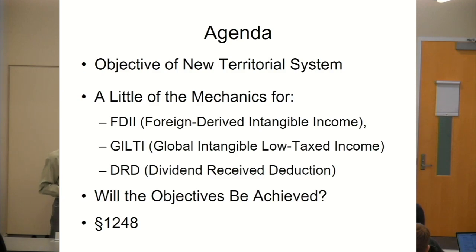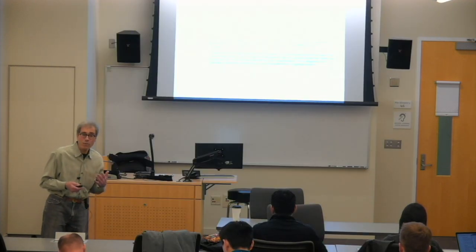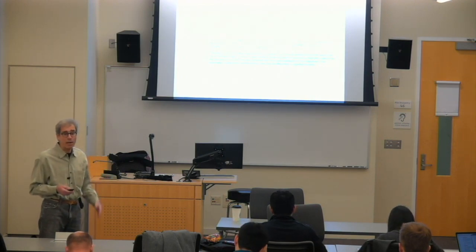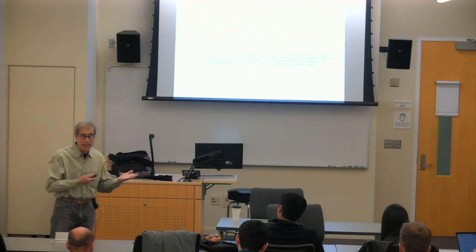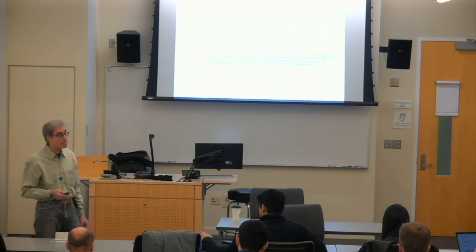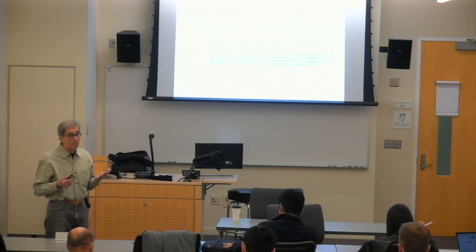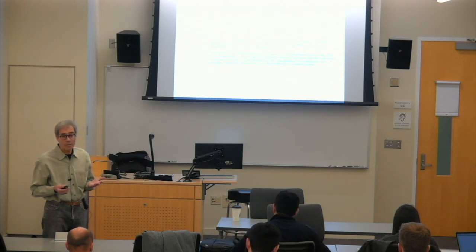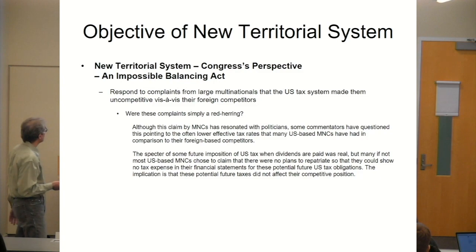And now for some of these, either proposed—well, for some of these, proposed regulations which have been issued over the past year. Now I put up here, referring to Congress's perspective, what were they trying to do? And what they were trying to do was at least what I'm calling an impossible balancing act. They had all sorts of factual situations that they looked at in terms of what's been happening over the past couple of decades to corporate tax revenues. They also had a lot of companies complaining about not being competitive. They had budgetary issues, so lots of things.